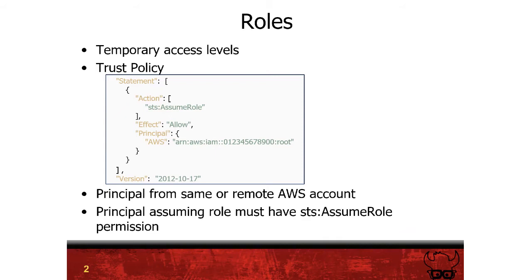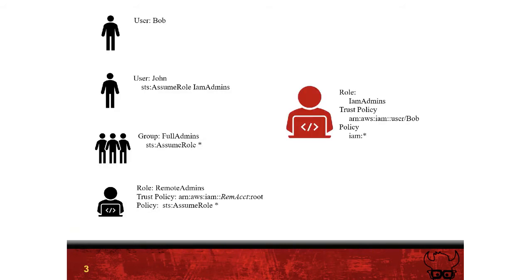One important note: the AWS account in the trust policy can be from the same account the role is in or from a remote account. Now, the default trust policy might seem a little permissive, but in order for the user to actually assume the role, they still need to have been granted a special permission within their policies — the STS AssumeRole permission. That could be assigned to one specific role or to all roles. With well-defined, minimally-scoped policies, who has that permission should be well controlled. However, as stated in the previous video, what we often see is that policies are way too broad, and users have inadvertently been granted STS AssumeRole:* — permission to assume any role.